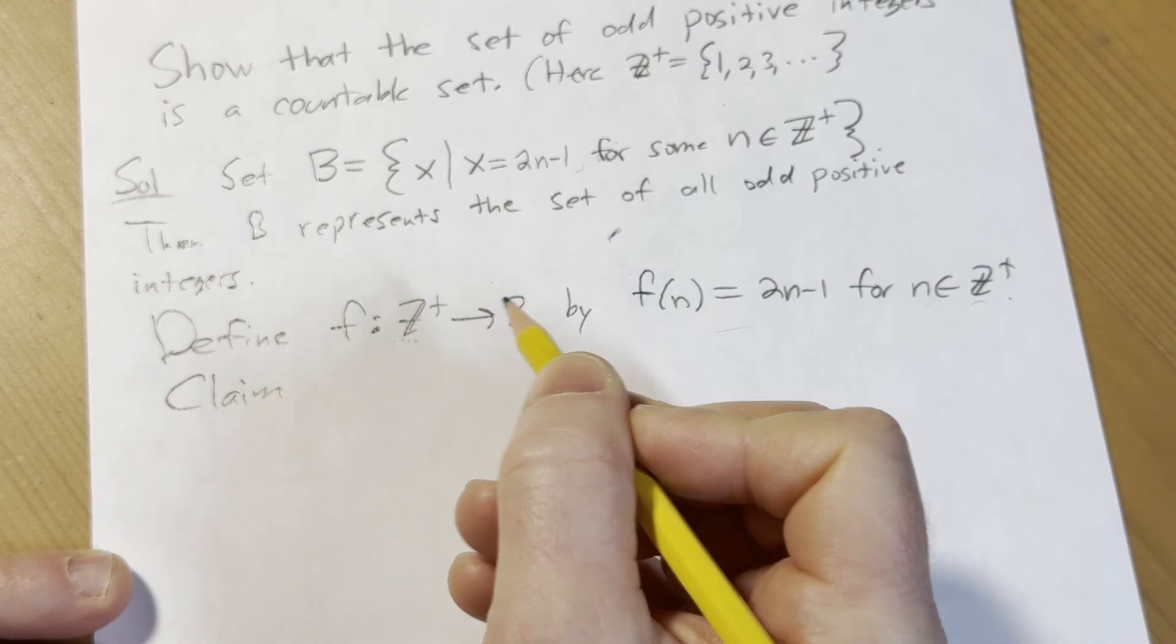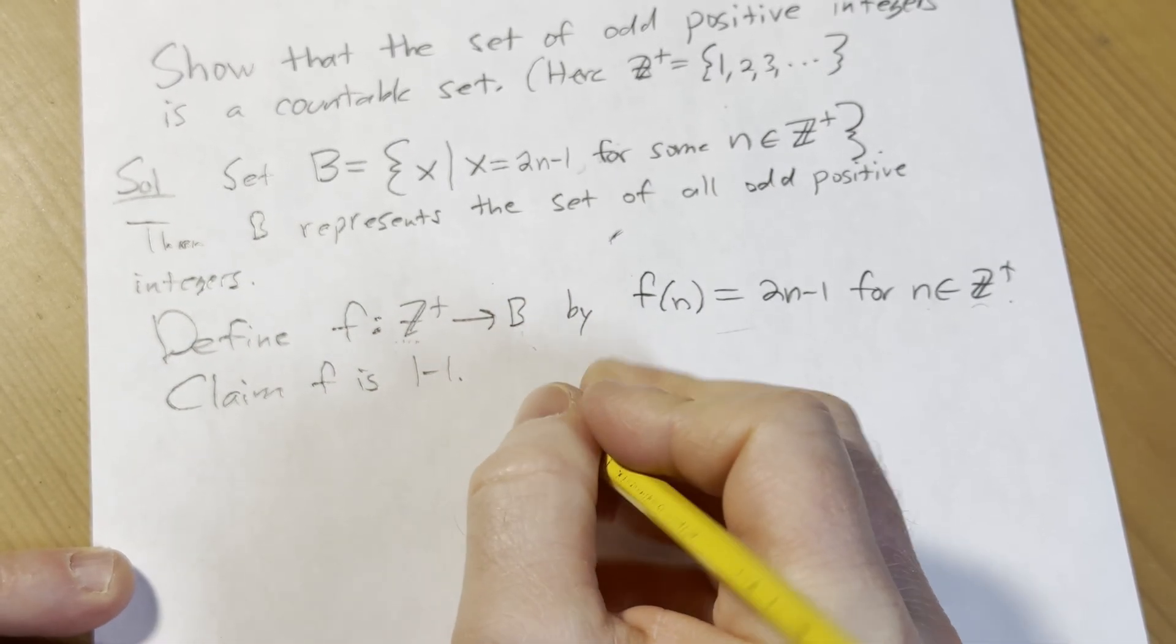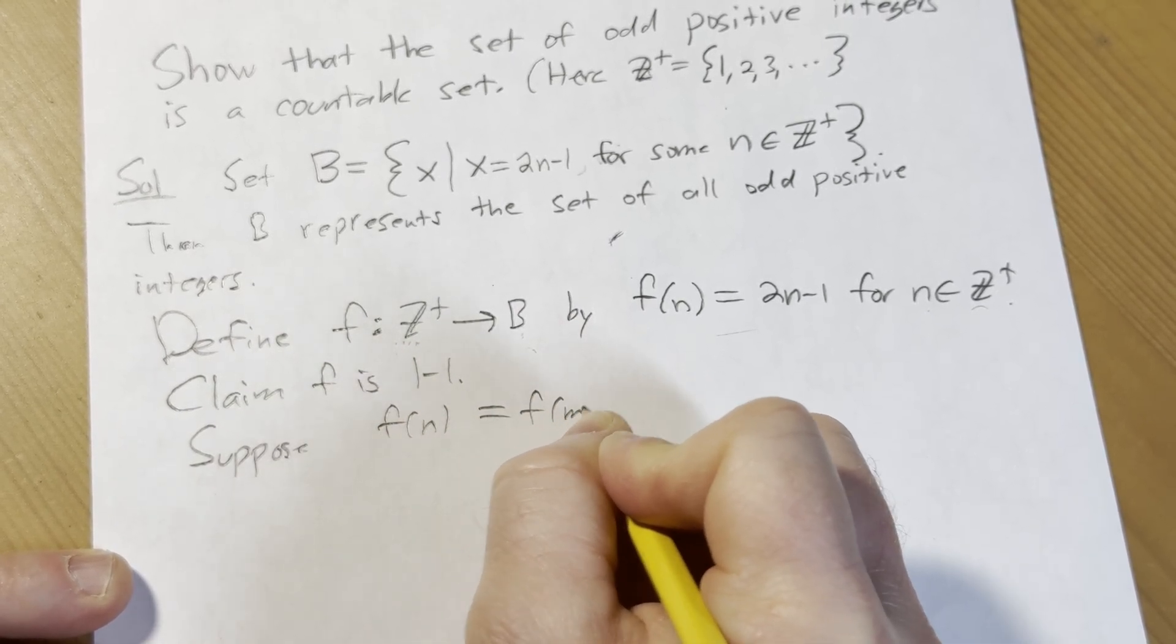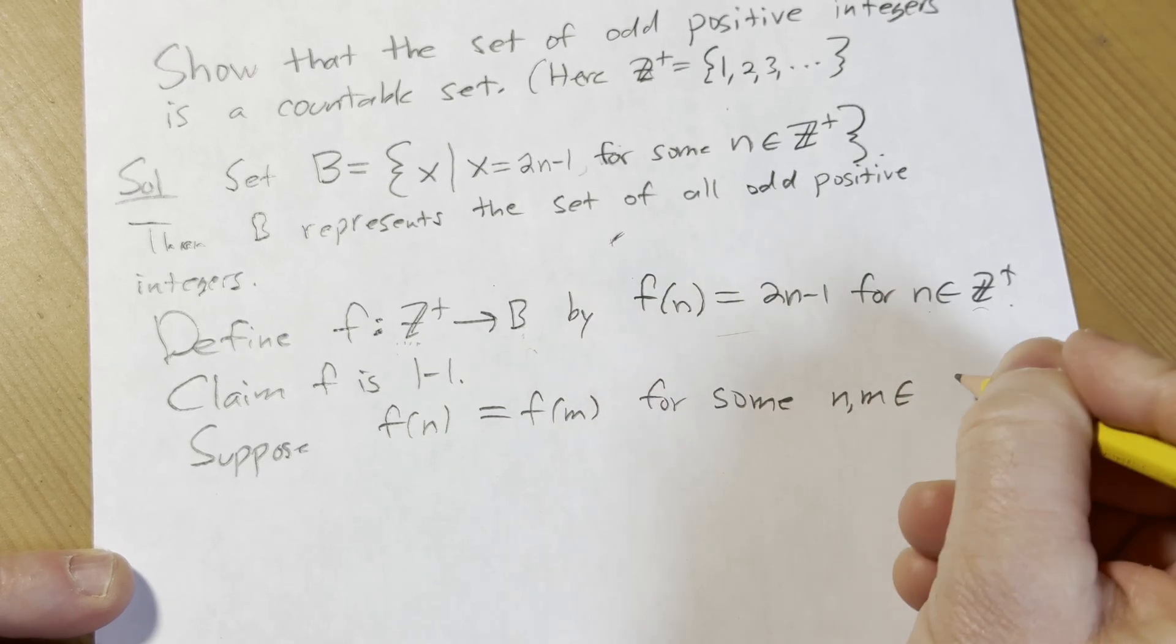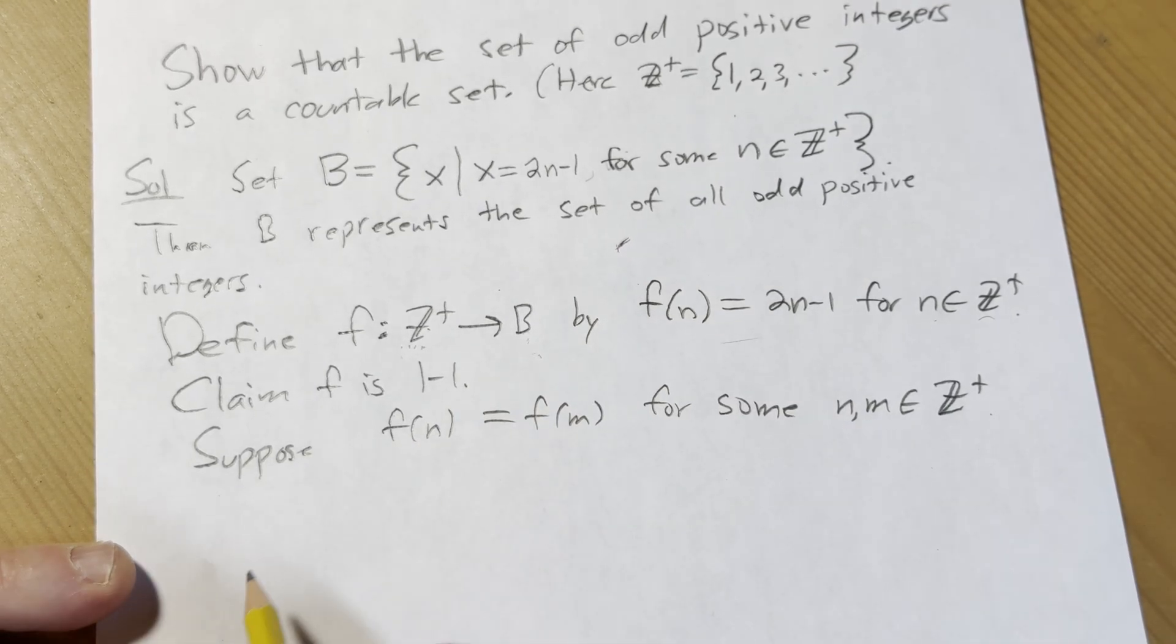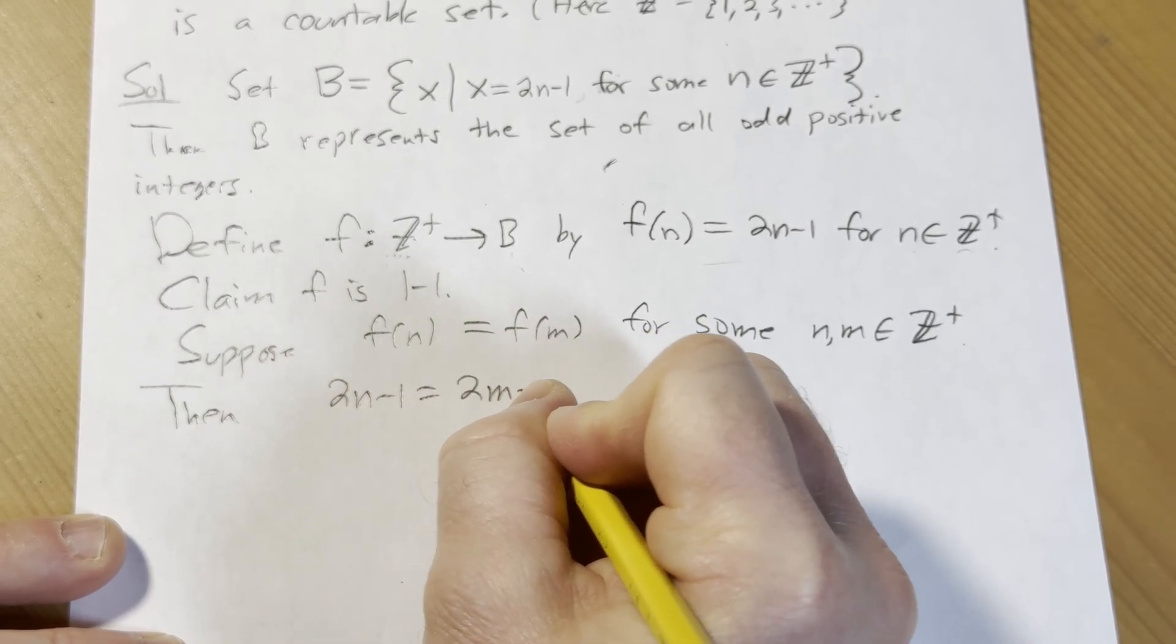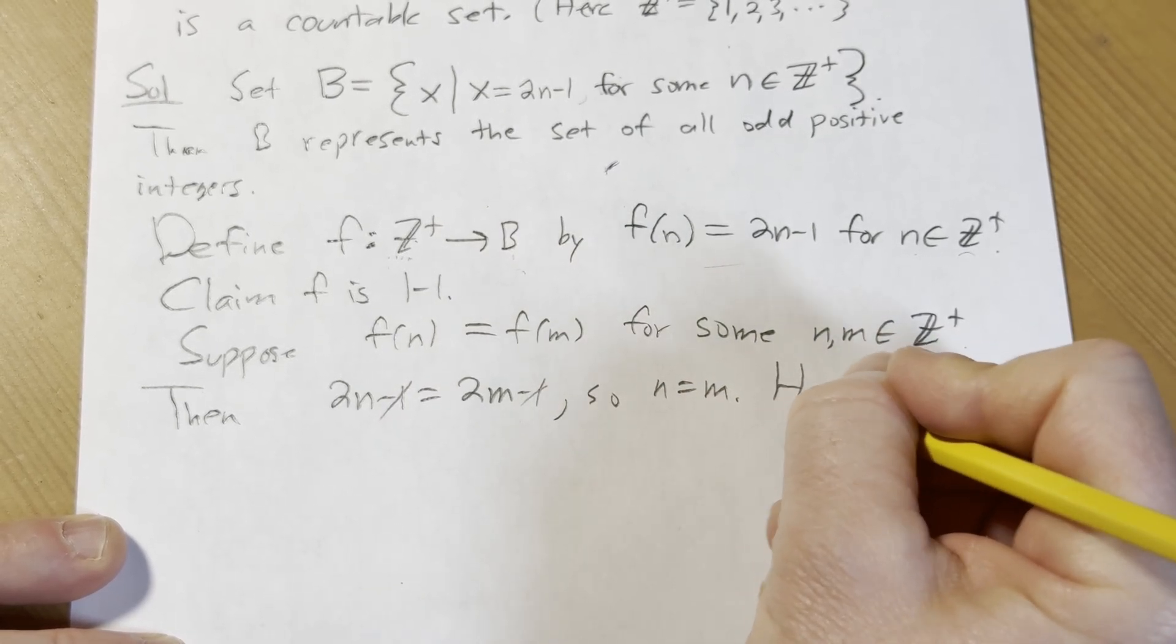Claim, it's a one-to-one correspondence. So first we're going to show it's one-to-one. Claim f is one-to-one. So suppose, to show it's one-to-one, suppose we have f of n equal to f of m for some n, m in Z plus. And we have to show that n equals m. So then, in this case we have 2n minus 1 equals 2m minus 1. You add the ones, so n equals m. Pretty easy. Hence f is one-to-one.